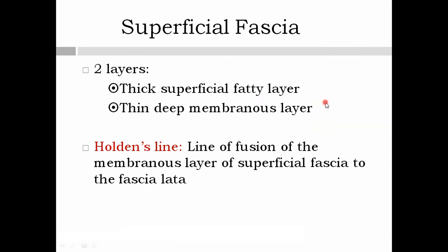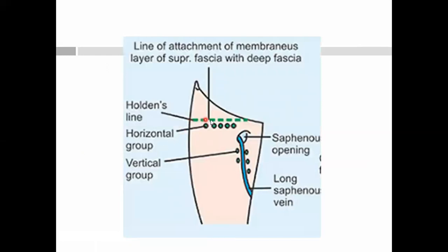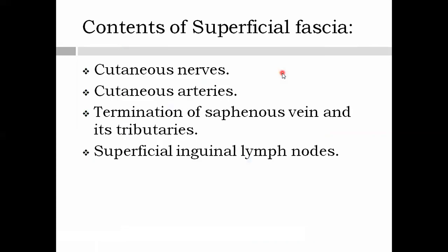This is very similar to the superficial fascia of the anterior abdominal wall, and it courses upward and continues with the anterior abdominal wall. Next we have Holden's line — the line of fusion of the membranous layer of the superficial fascia to the fascia lata or the deep fascia of the thigh. This membranous layer is the thin layer that fuses with the fascia lata, and that line is called Holden's line, which corresponds to the crease of the thigh — the point of movement between the hip and the thigh. Now, the contents of the superficial fascia.